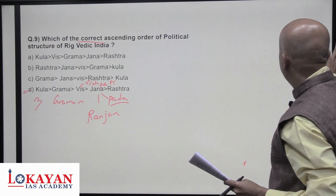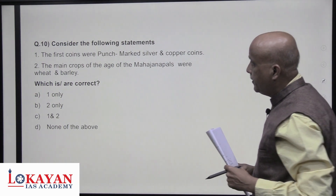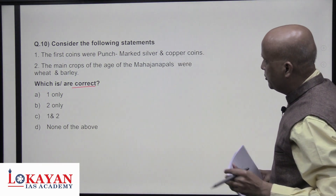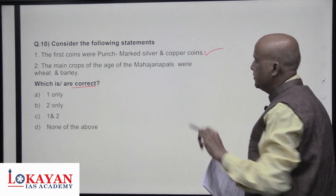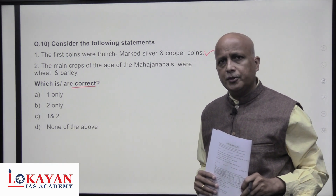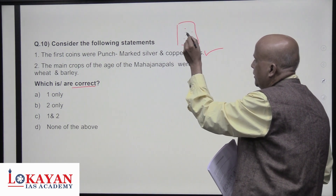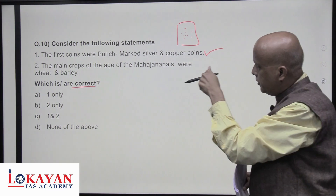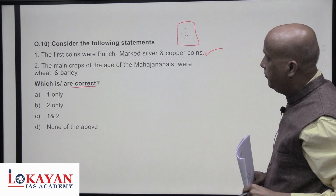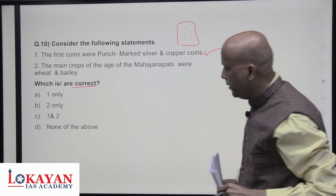Consider the following statements. The first coins were punch-mark silver and copper coins — true; we do not find gold coins initially in India but punch-mark coins with rectangular shapes and designs. The main crop in the age of Mahajanapadas was wheat and barley — also true. Both statements are correct, so answer is C.